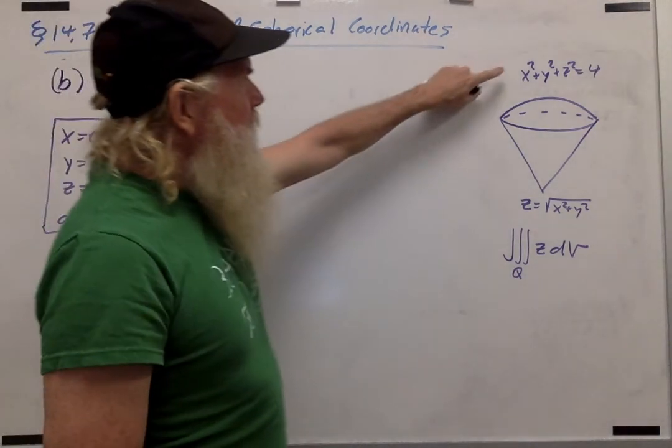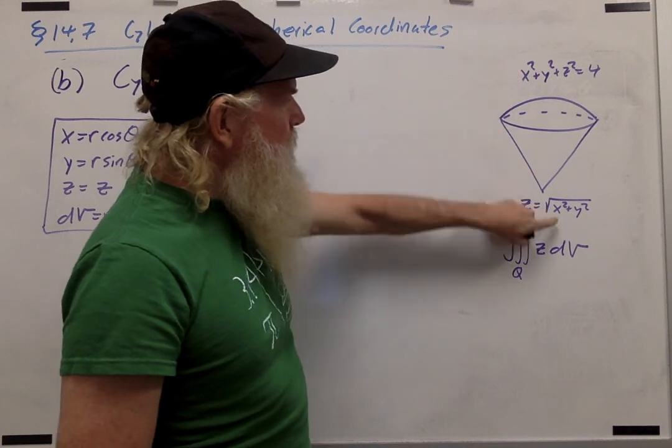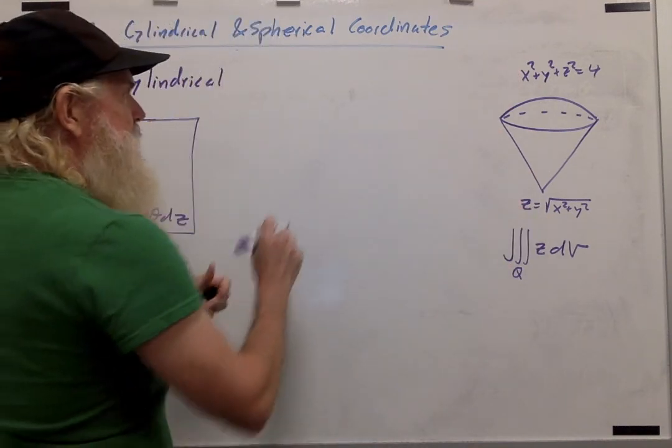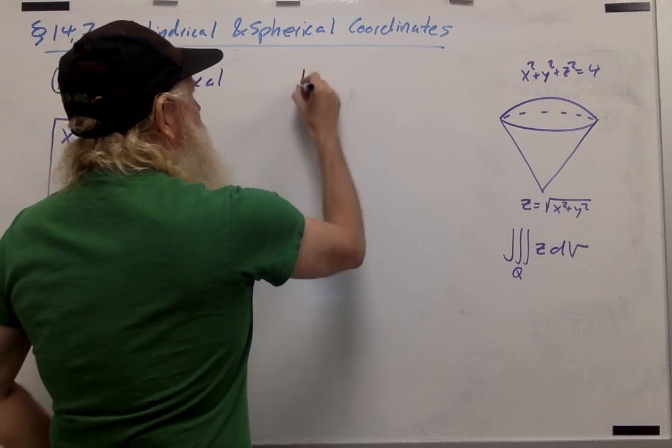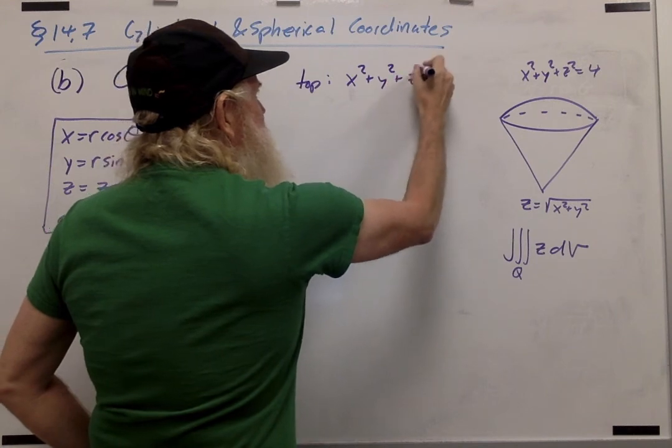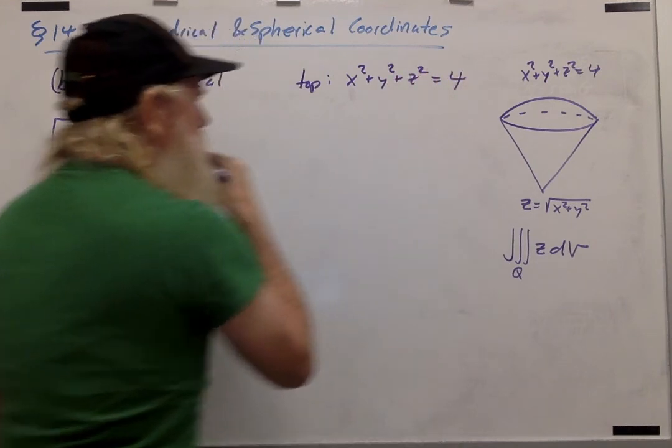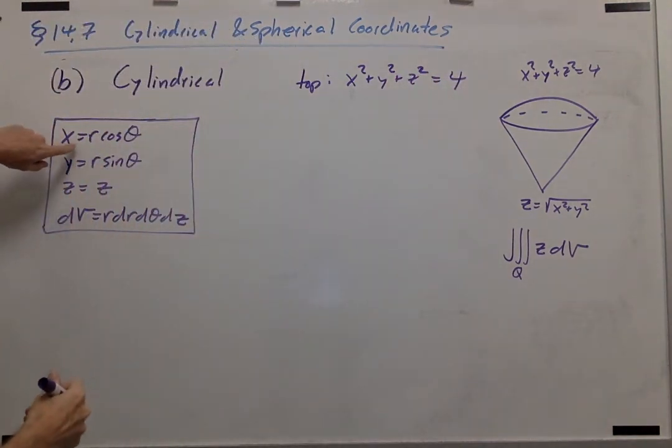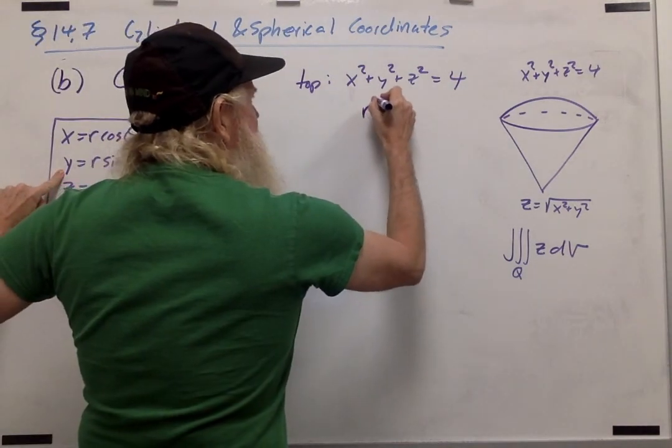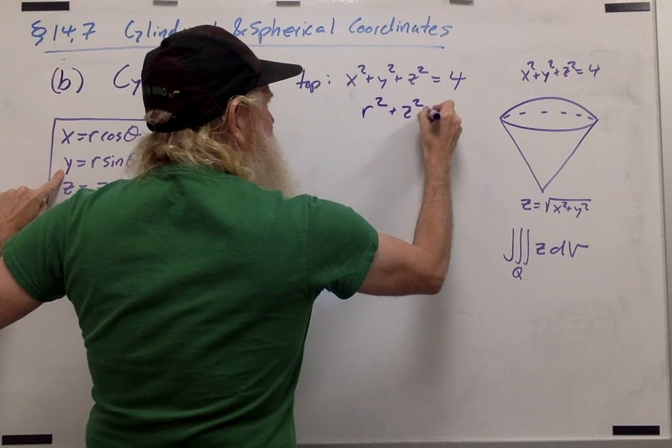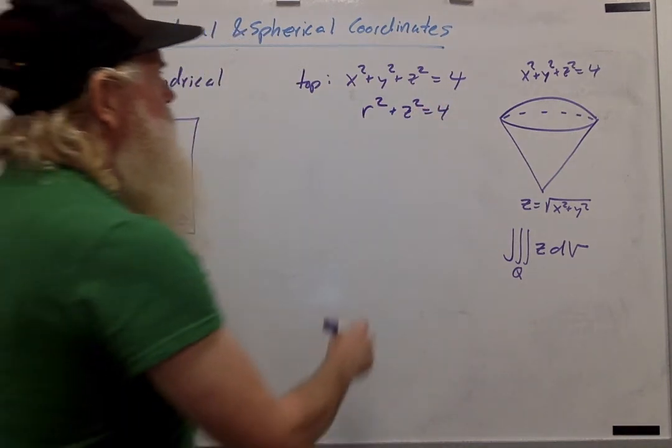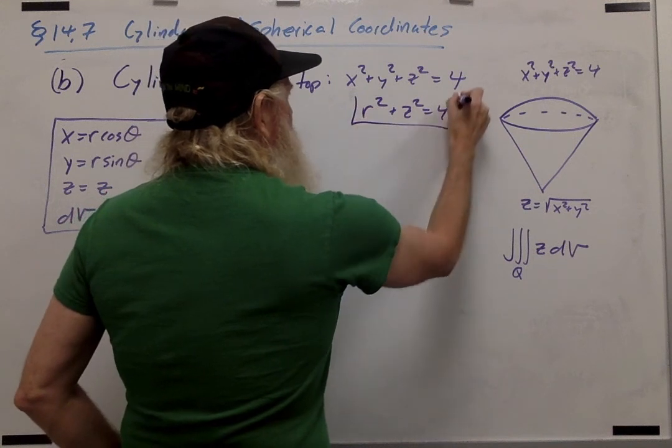Let's start by rewriting the equations for the top and bottom surfaces in cylindrical coordinates. First for the top, the sphere, we have x squared plus y squared plus z squared equals 4. Since x squared plus y squared is r squared, this is the same as r squared plus z squared equals 4.